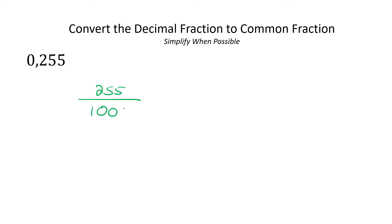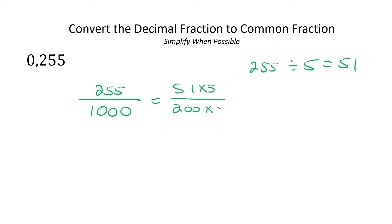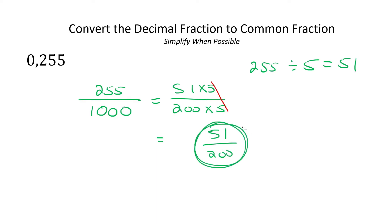Now here we have one, two, three decimals from the back, so we say 255 over a thousand. I know that the number five can go in here — I don't know exactly how many times, so I'll quickly do a divide. 255 divided by five is 51, so I could rewrite this as 51 multiplied by five, and 1000 as 200 multiplied by five. So the fives can cancel, and you're left with 51 over 200. Always make sure those can't simplify further — but they can't.